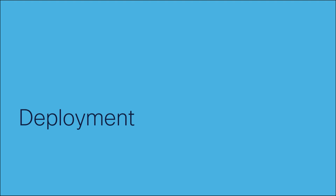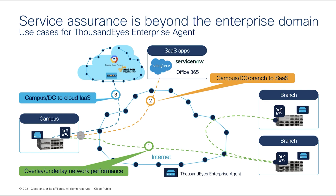Now that we've learned about integration benefits and ordering, let's look at deployment options. Here's a typical campus setup: we have a main campus, branch locations, and cloud infrastructure including SaaS applications. You can deploy the ThousandEyes Enterprise agent on campus or branch to measure network and application performance — between campus and branches, branch to branch, and from campus or branch to your cloud infrastructure. You can test from your Enterprise agent to any destination.